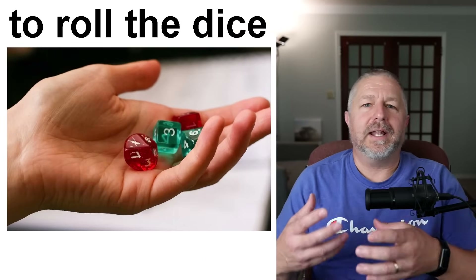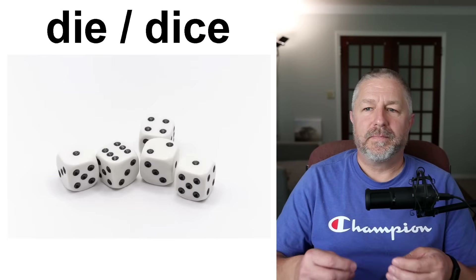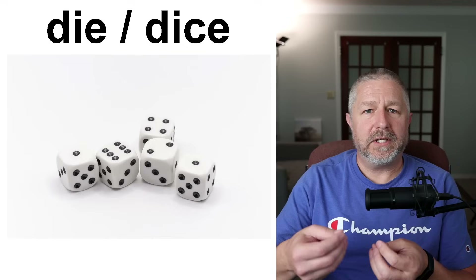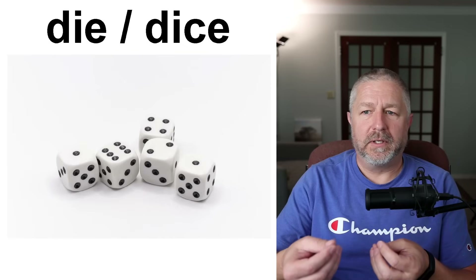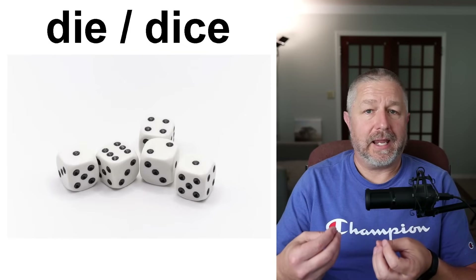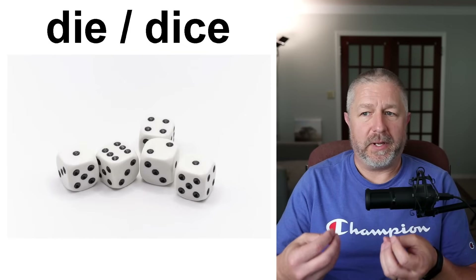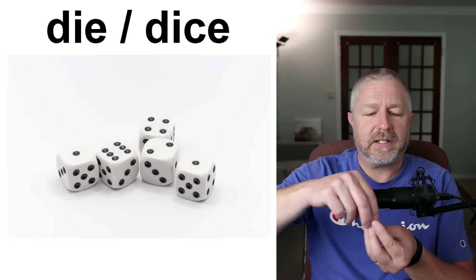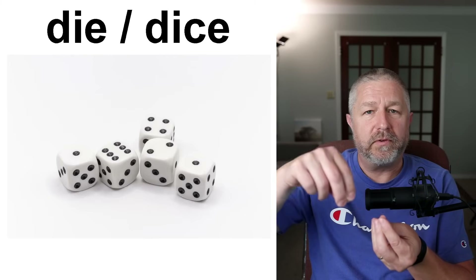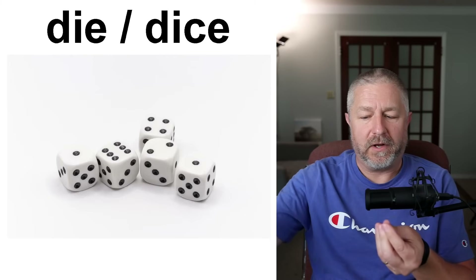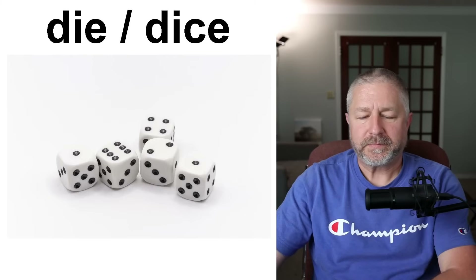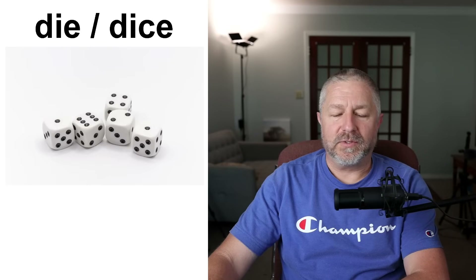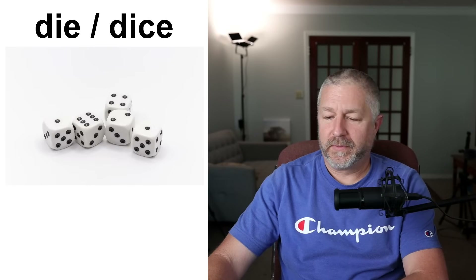You have dice to randomly generate a number and then you do something in the game with that number depending on the rules. Maybe you get a six and you move your game piece six times on the game board. That is what you would use dice for.